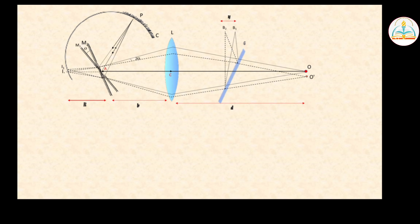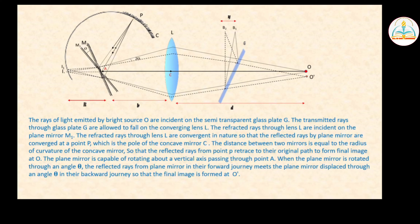Now we will know the calculations. The ray of light emitted by the bright source O is incident on the semi-transparent glass plate. The transmitted rays through the glass plate fall on the converging lens. The refracted rays through the lens are incident on the plane mirror, and the reflected rays are convergent, converging at point P which is the pole of the concave mirror C. The distance between the two mirrors equals the radius of curvature of the concave mirror.